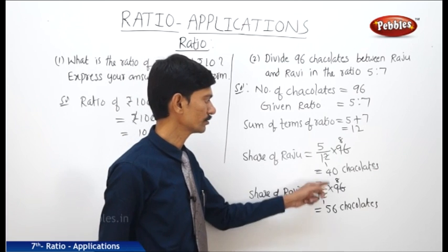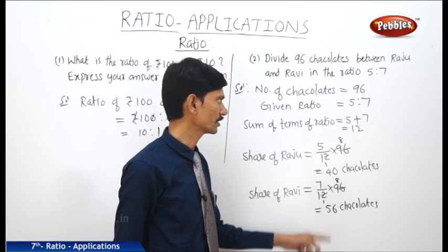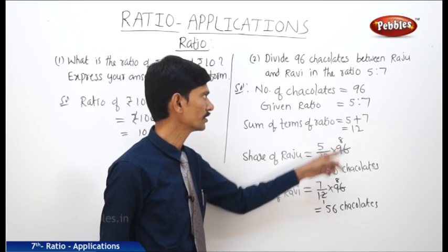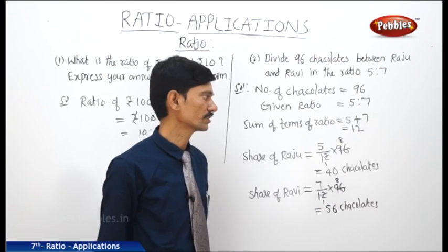If you add the two shares, 40 plus 56 equals 96, which confirms we get the total number of chocolates.